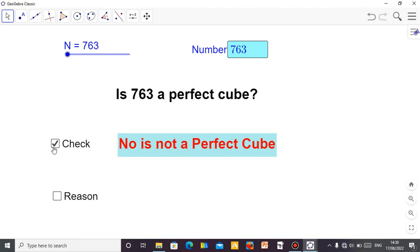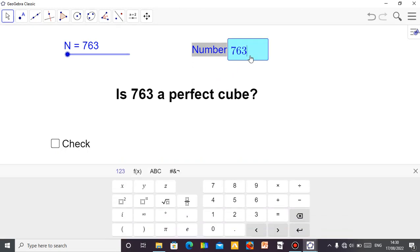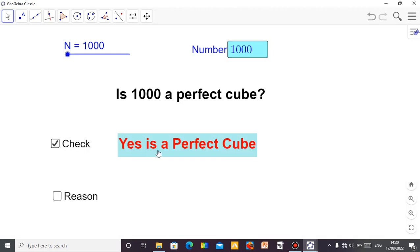But if you check a number like 1000, which is 10 times 10 times 10, and if you check, yes, it's a perfect cube.